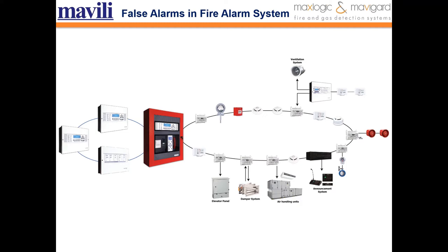Residents who are warned with audible and visual alarm devices should evacuate the building by following the emergency exit plan. In addition, fire alarm systems trigger other systems in the building, such as smoke evacuation and extinguishing processes.